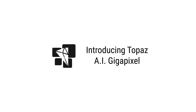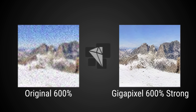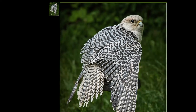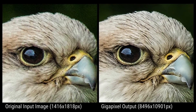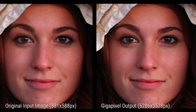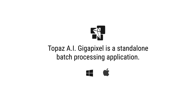Introducing Topaz AI Gigapixel. AI Gigapixel uses the power of artificial intelligence to accurately recreate missing details in your images. Trained on millions of images using deep learning technology, AI Gigapixel can enlarge images and fill in details that other resizing products leave out. AI Gigapixel is a standalone batching application for Windows and Macintosh. To learn more, visit our website at topazlabs.com/AI-Gigapixel.